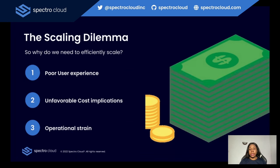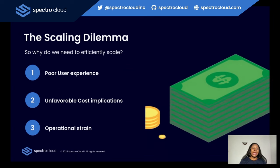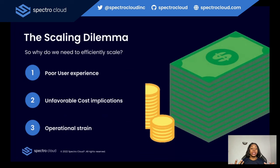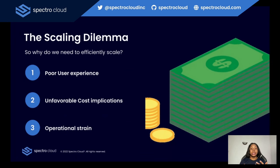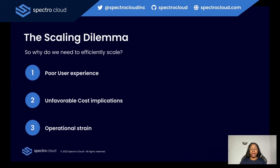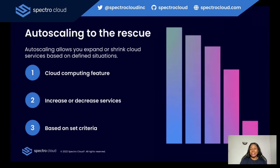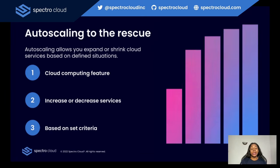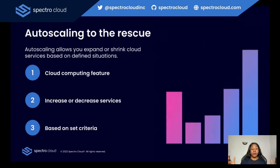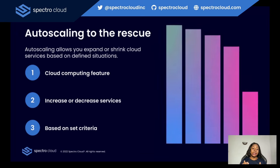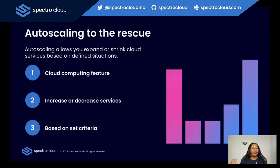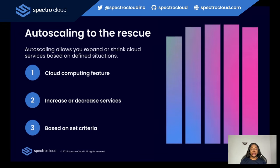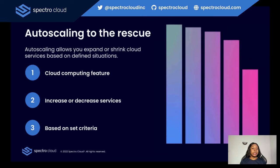Because of these problems, there's an urgent need for a solution that allows organizations to adapt seamlessly to changing workloads, and autoscaling is the answer to the scaling dilemma. So what exactly is autoscaling? Autoscaling is a cloud computing feature that allows organizations to automatically increase or shrink cloud services like server capacities or virtual machines, based on defined situations like traffic utilization levels.